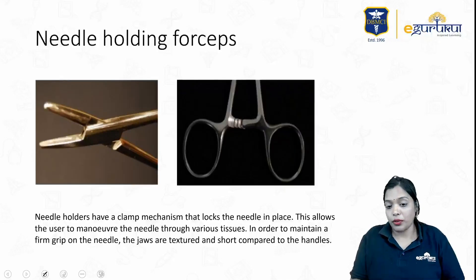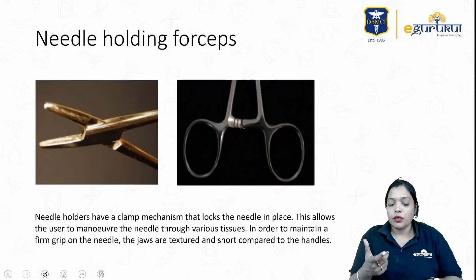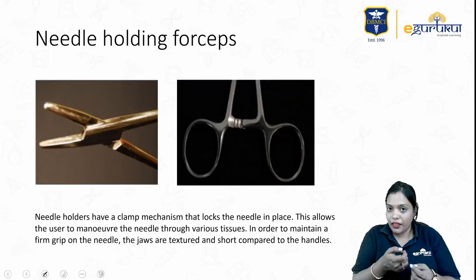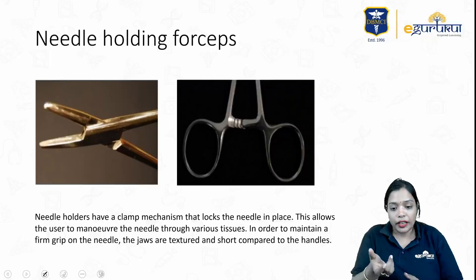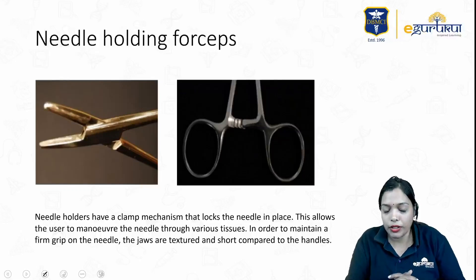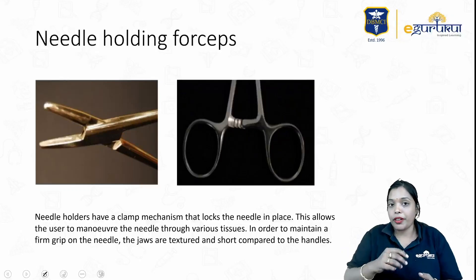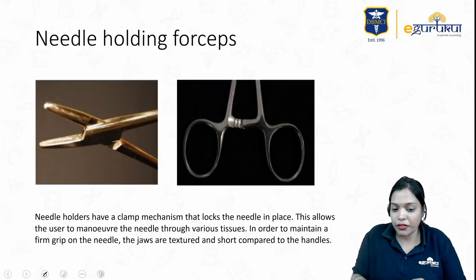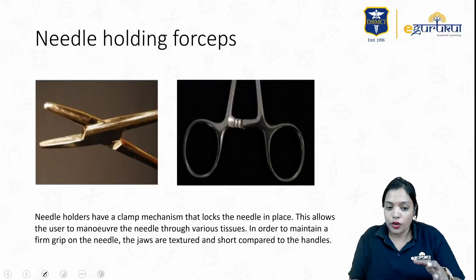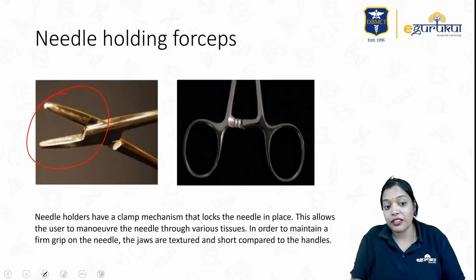This is the needle holding forceps. It has a clamp mechanism so that the needle stays in place. The clamp mechanism and proper grip help manipulate the needle however we want. The jaw is also textured and small.